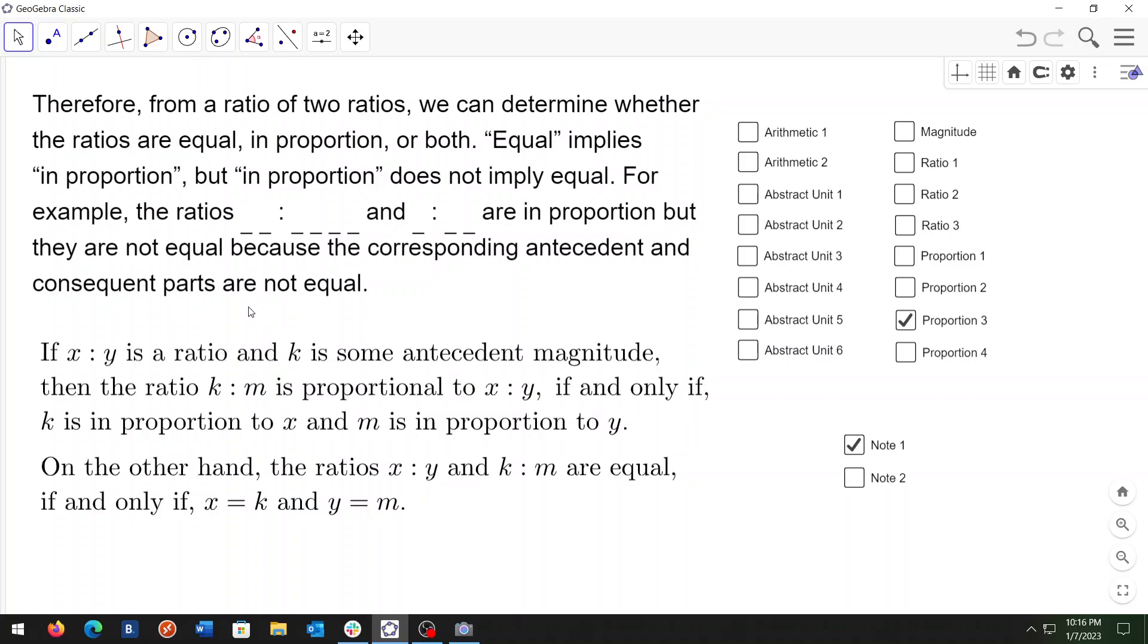If x to y is a ratio and k is an antecedent magnitude, then the ratio k to m is proportional to x to y if and only if k is in proportion to x and m is in proportion to y. On the other hand, the ratios of x to y and k to m are equal if and only if x is equal to k and y is equal to m.